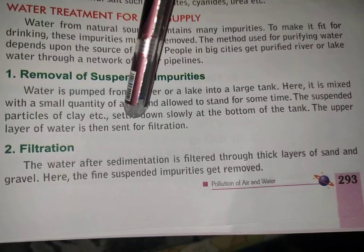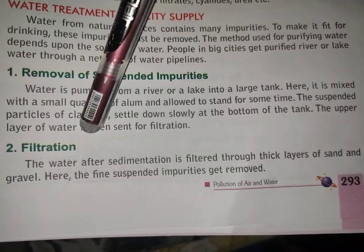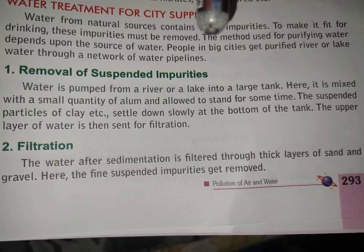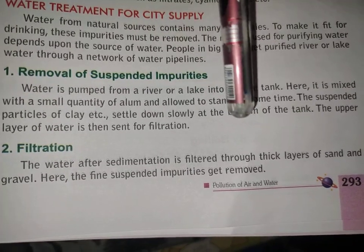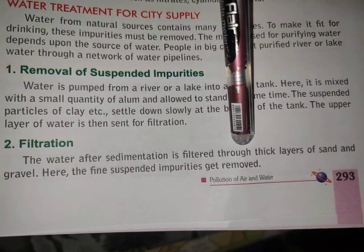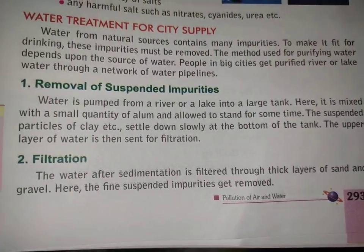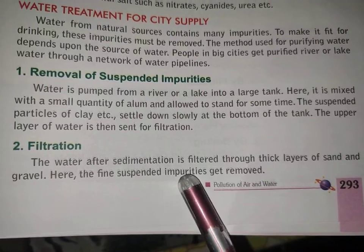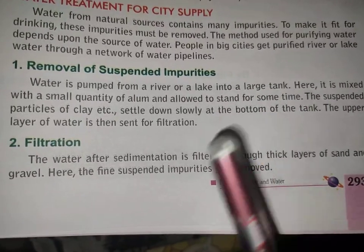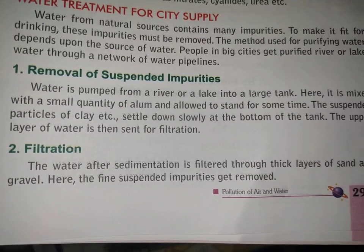Then the upper layer of water is sent for filtration — to the next tank, that is the filtration tank. After sedimentation (sedimentation means settling down at the bottom), the water is filtered through a thick layer of sand and gravel. Here the fine suspended impurities get removed. The alum added in the first step attracts impurities, which settle down; then the water passes through sand and gravel, trapping remaining fine impurities.